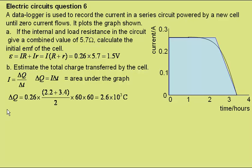So, I can say that my charge transferred, delta Q, is equal to 0.26, the height here, multiplied by the average width of this space, which is 2.2 at the top, 3.4 at the bottom. So, I find the average by adding these together and divided by 2.